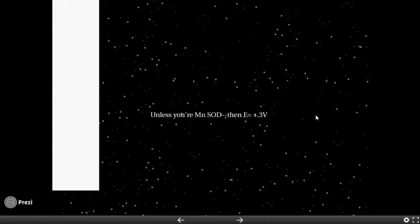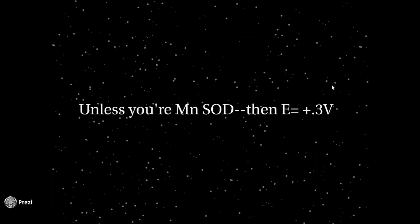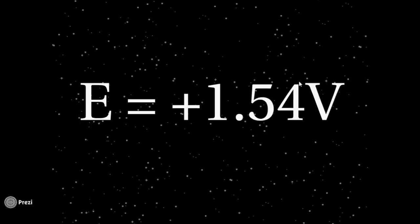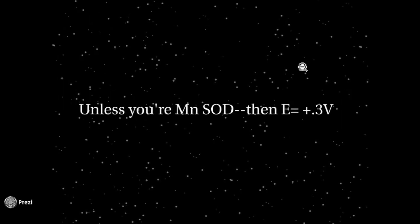Conveniently, the reduction potential of manganese superoxide dismutase has been experimentally determined to be plus 0.3V, which is right in the range where we want it. This is all well and good, but look at the difference between these reduction potentials. They're both manganese, so then what on earth is changing the reduction potential so much?